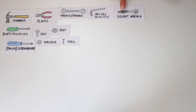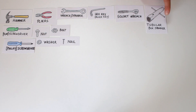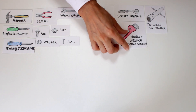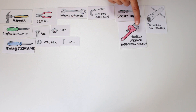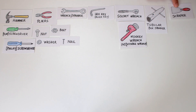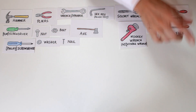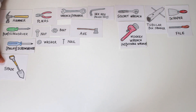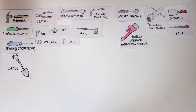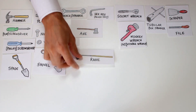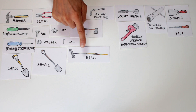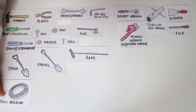Socket wrench, tubular box spanner, monkey wrench or adjustable wrench, scraper, axe, file, spade, shovel, rake, ball bearing.